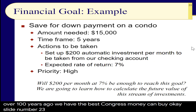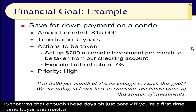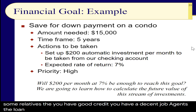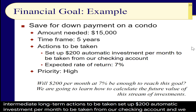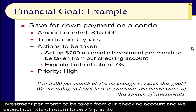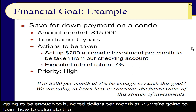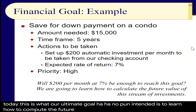Slide 23: save for the down payment on a condominium — $15,000 needed. Just barely enough these days if you're a first-time home buyer, scrounging money from relatives, with good credit and a decent job. Time frame: five years — intermediate to long-term. Actions to be taken: set up a $200 automatic investment per month taken from checking, with an expected rate of return of 7%. Priority: high. We're going to learn how to calculate the future value of this stream of investments.